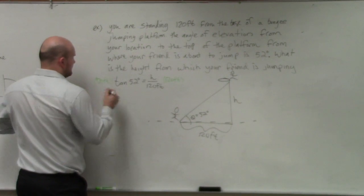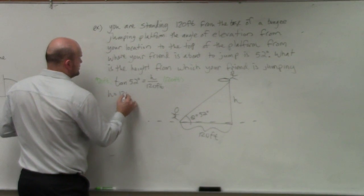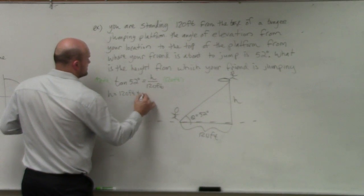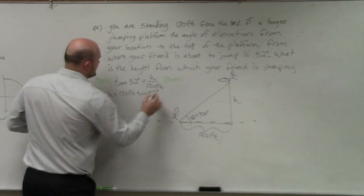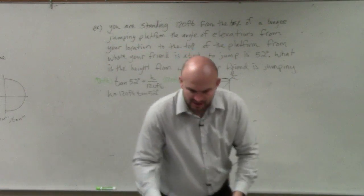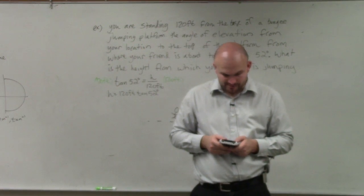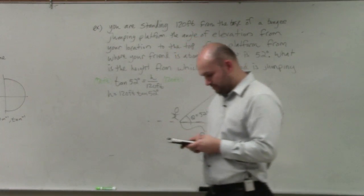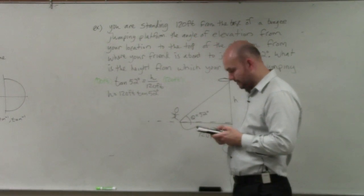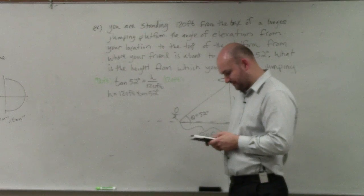So, therefore, I'll have H equals 120 feet times the tangent of 52 degrees. Make sure in your calculator that you have this, make sure your mode is in degree mode. And then, I'll just do 120 feet, or 120 times the tangent of 52.